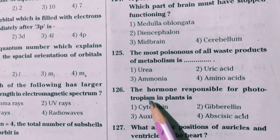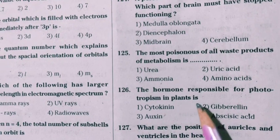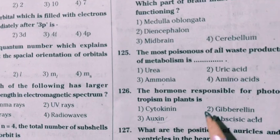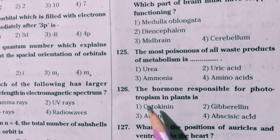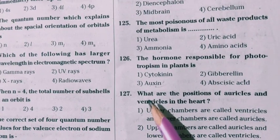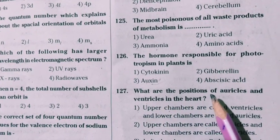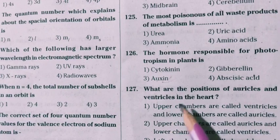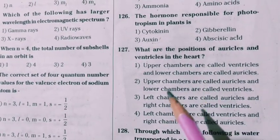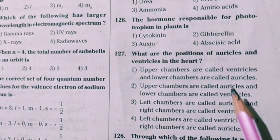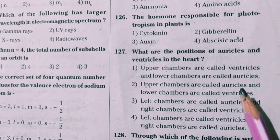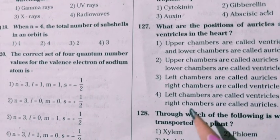Next question: the hormone responsible for phototropism in plants. Next question: what are the positions of auricles and ventricles in the heart? The upper chambers are called auricles and the lower chambers are called ventricles in the heart.